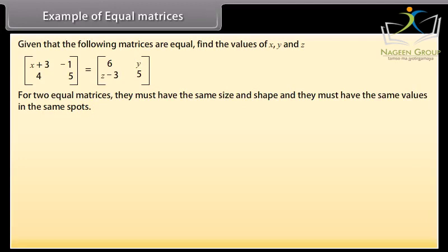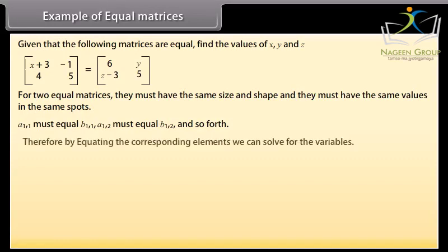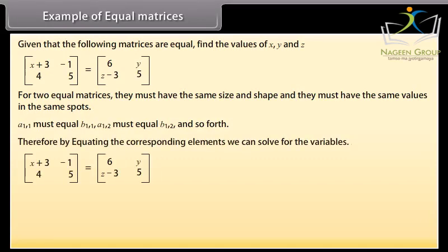And they must have the same values in the same spots. Or we can say A 11 must be equal to B 11, A 12 must be equal to B 12 and so forth. Therefore, by equating the corresponding elements we can solve for the variables. X plus 3 is equal to 6, X is equal to 3, Y is equal to minus 1, Z minus 3 is equal to 4, Z is equal to 7.